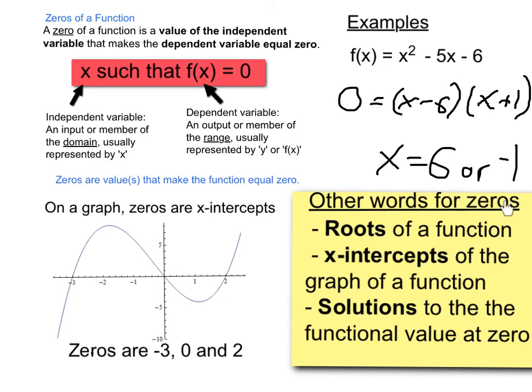Zeros are a rich topic we can't fully explore here, but I wanted to leave you with a few synonyms which mean basically the same thing as a zero. They're sometimes referred to as the roots of a function. The x-intercepts of a graph are zeros of a function, and we think of them as solutions to when the function is equal to zero.